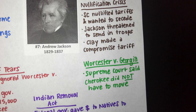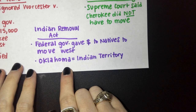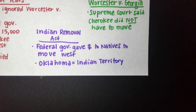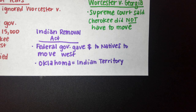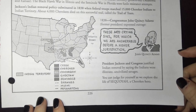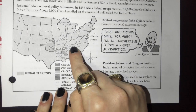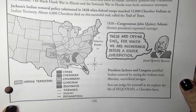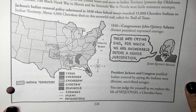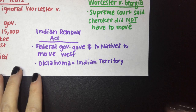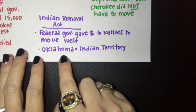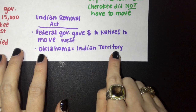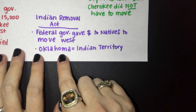In 1830, the Indian Removal Act was passed. This law said the federal government would give money — compensation — to Native Americans to get them to move west. The federal government was interested in land in Florida, Georgia, and Tennessee, thinking there might be gold or other valuable resources there. The Indian Removal Act would force Native Americans to move to what is called the Indian Territory, which is modern-day Oklahoma and a little bit of Kansas.